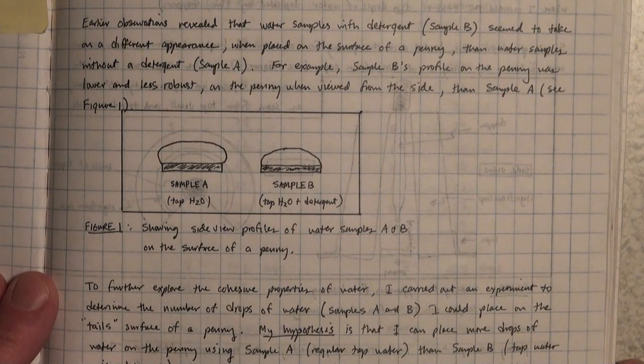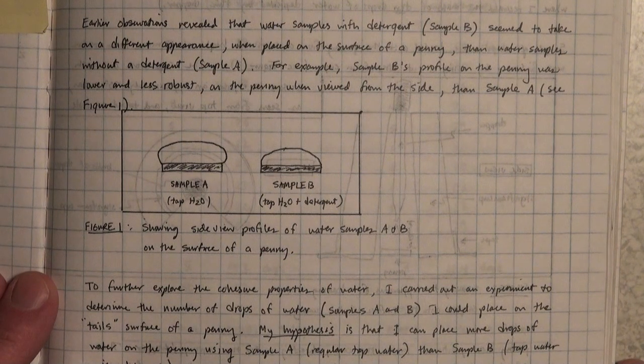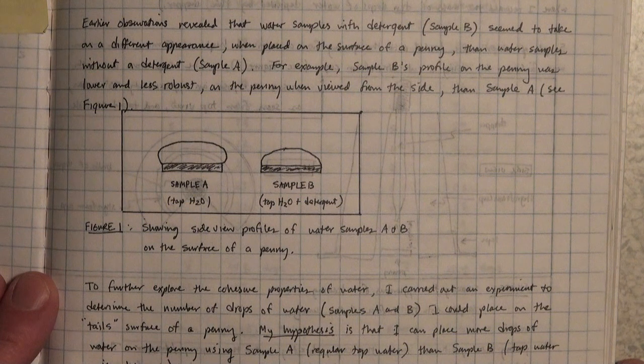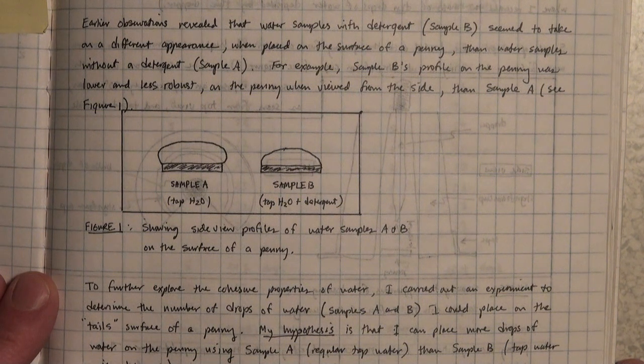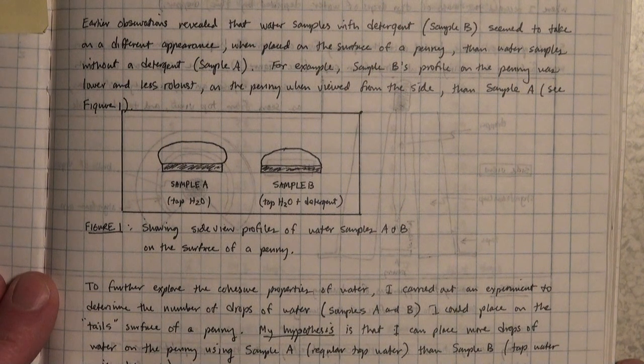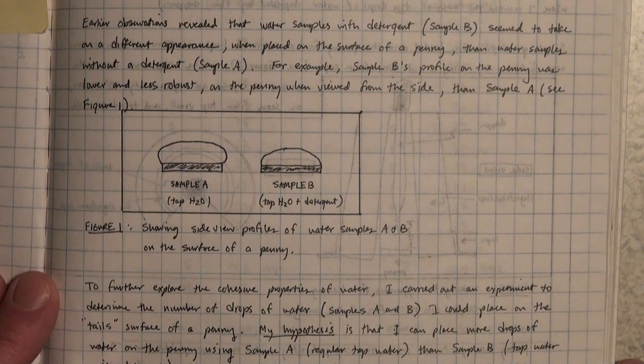Earlier, our observations revealed that water samples with detergent seemed to take on a different appearance when placed on the surface of a penny than water samples without detergent. For example, sample B's profile on the penny was lower and less robust when viewed from the side than sample A. You can see that in Figure 1.